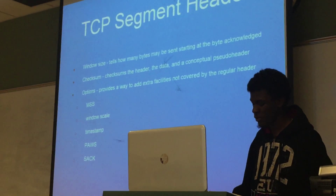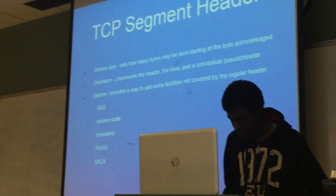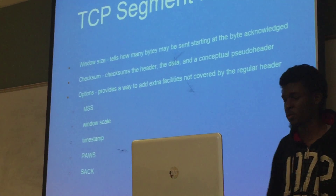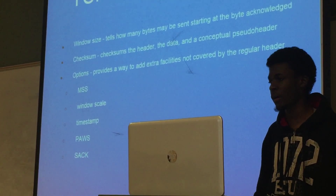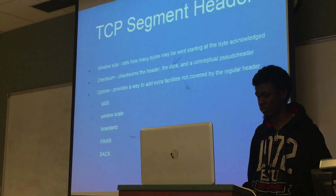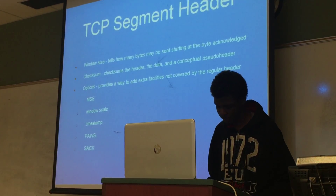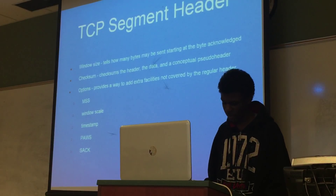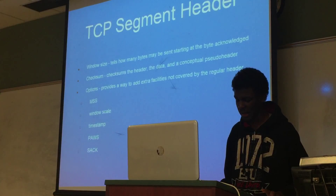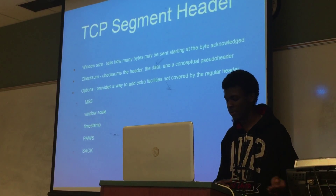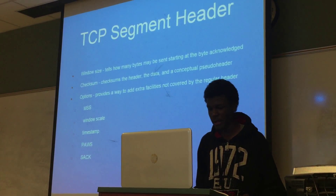And lastly, we have the selective acknowledgement option. What this does is allow a receiver to specifically acknowledge what data it has received that has not been acknowledged, after subsequent data has been sent. The reason why this is used is because the acknowledgement number just signifies the next byte in order — it doesn't acknowledge bytes that have not arrived and subsequent data that has come after it. So it's for more accurate data tracking.